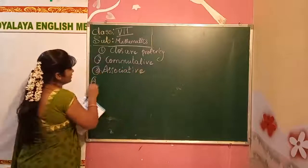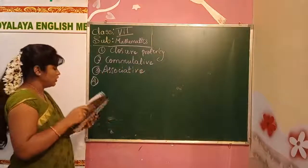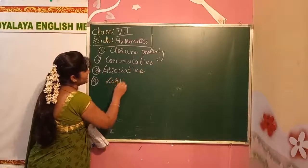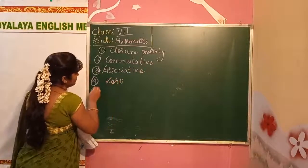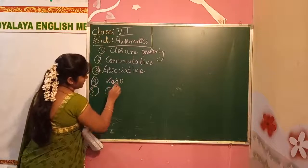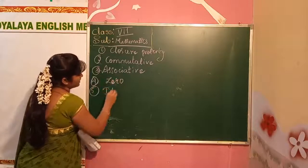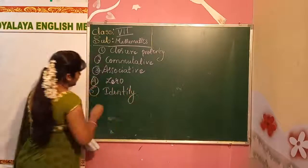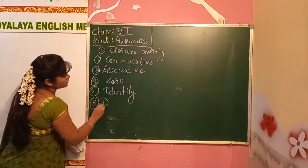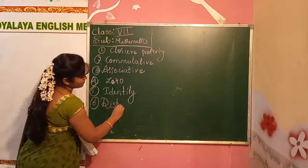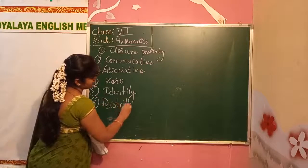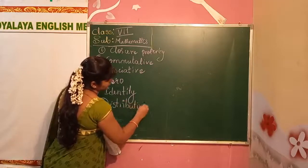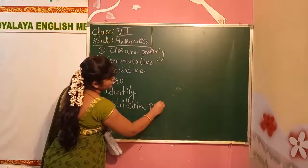The fourth one is multiplication by 0. I am writing only shortcuts today — just revising. The fifth one is 1, which is called the identity property. And the sixth one is the distributive property.